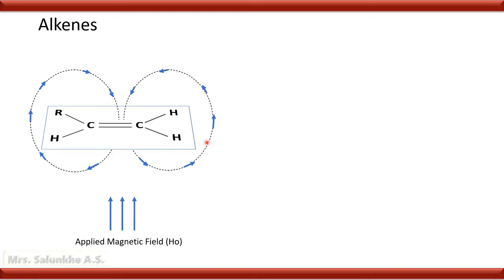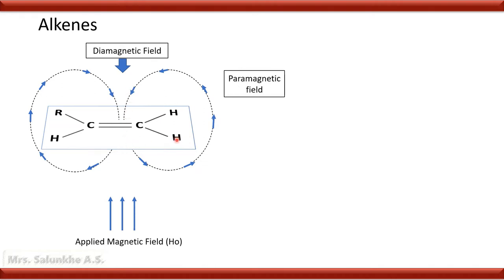While arrows parallel to the applied magnetic field indicate a paramagnetic field — a deshielded zone — where the field aligns with the applied magnetic field. Due to these diamagnetic and paramagnetic regions, there are two zones: a shielded zone and a deshielded zone. The diamagnetic field is above and below the carbon-carbon double bond — that is the shielded zone. The paramagnetic field indicates the deshielded zone, and the proton is present in that deshielded zone. Therefore, it requires less magnetic field to come under resonance, and the deshielded proton has a higher chemical shift value.